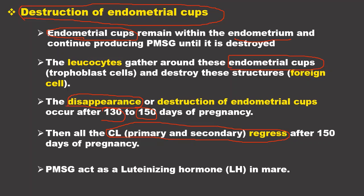PMSG acts as a luteinizing hormone in mares, because it luteinizes cells to form corpus luteum. This corpus luteum forms the main source of progesterone from early pregnancy through to approximately 100 days of pregnancy.